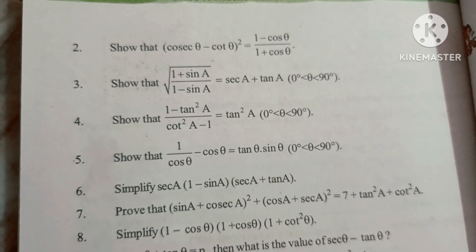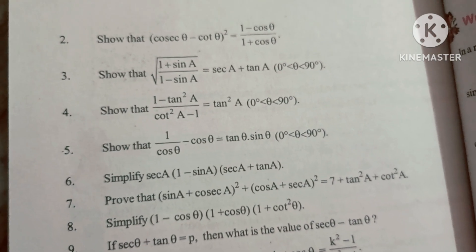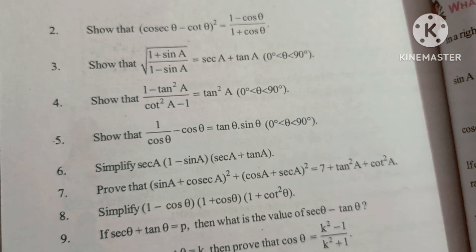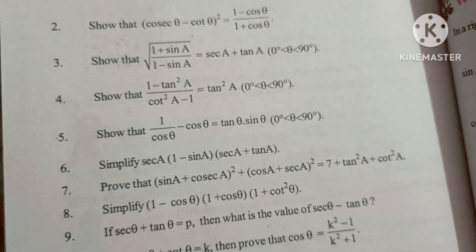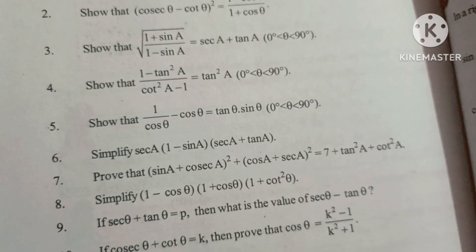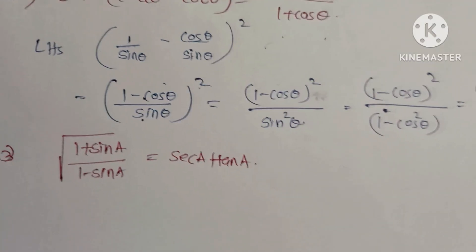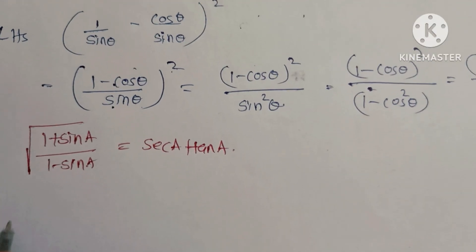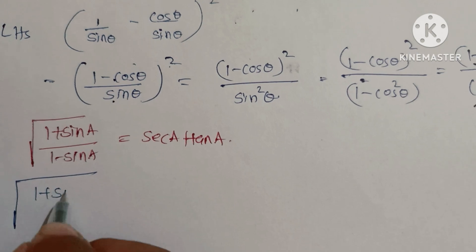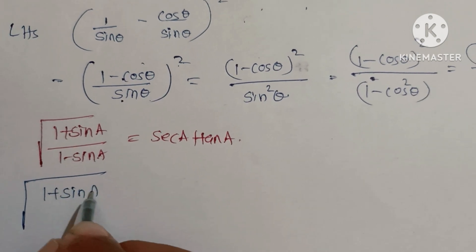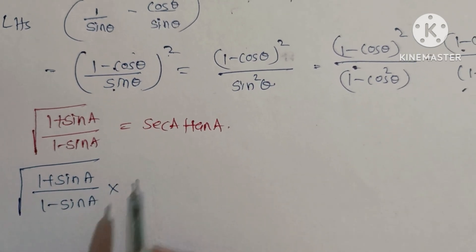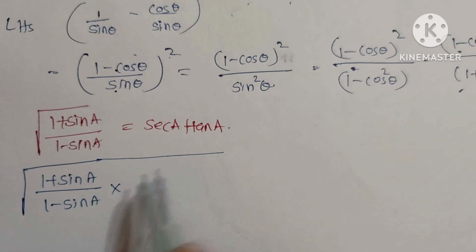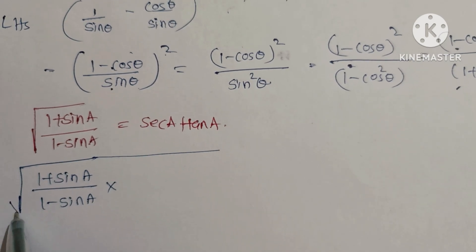Show that √[(1 + sinA)/(1 - sinA)] = secA + tanA. Take LHS: √[(1 + sinA)/(1 - sinA)]. We need to rationalize the denominator by multiplying by (1 + sinA)/(1 + sinA).